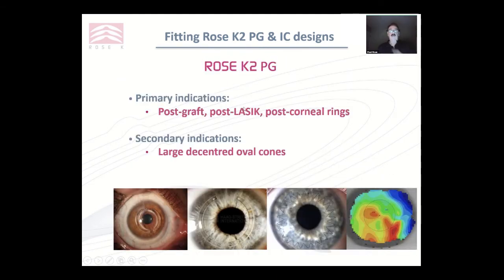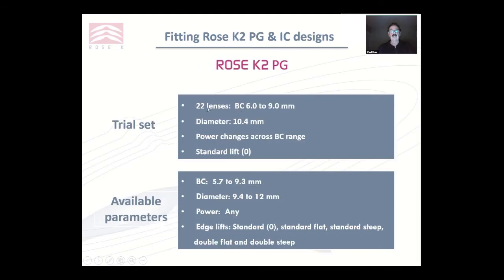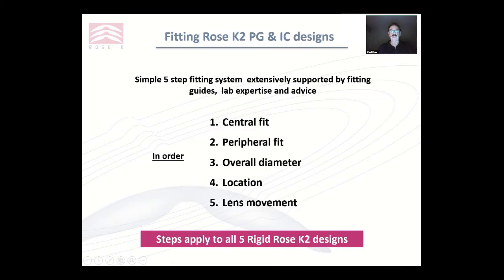Post-graft are the primary indications for this lens, along with post-LASIK and post-corneal rings. The second indication is large decentred oval cones. The trial set is quite extensive — 22 lenses with a significant range of base curves, and you can go both steeper and flatter than the trial set range. Standard diameter is 10.4, but you have a large range from 9.4 to 12mm, and there are five standard edge lifts.